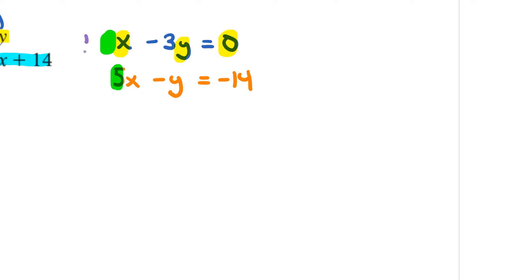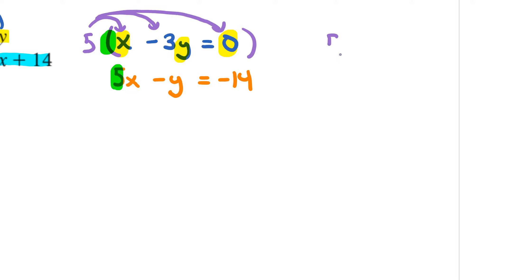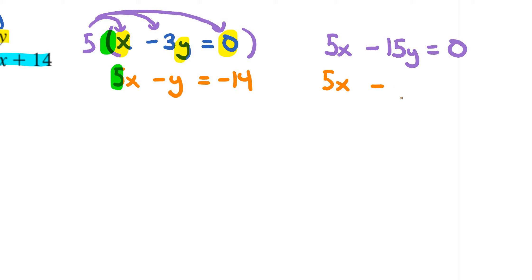What you can do is multiply the first equation by 5. So if I distribute this 5 onto the first equation, I now get 5x. So 5 times x is 5x, and then 5 times negative 3 is negative 15, so negative 15y. And finally, 5 times 0 is going to be 0. Then from there, I can just rewrite the second equation just below the first equation.